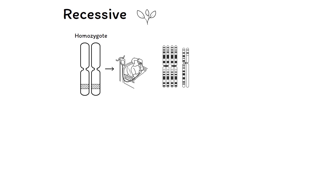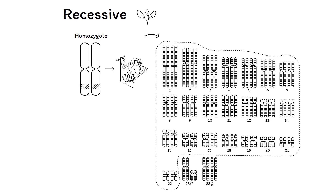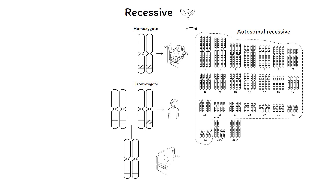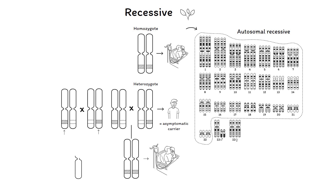When a disorder only develops if someone is a homozygote for a genetic variant, the disorder is inherited in a recessive manner. And when the affected gene is located on the autosomes, it is called an autosomal recessive disorder. Heterozygotes are carriers of the genetic variant that don't get the disease themselves, but may pass it on to the next generation — they are called asymptomatic carriers. Recessive disorders can also be caused by two different allelic variants that lead to two wrong copies of the gene. This is called compound heterozygous recessive inheritance.